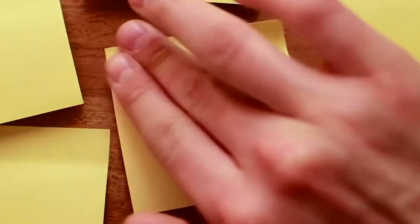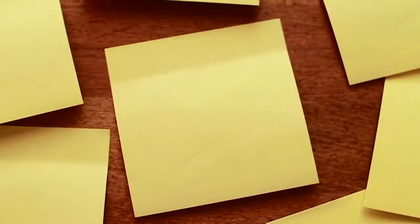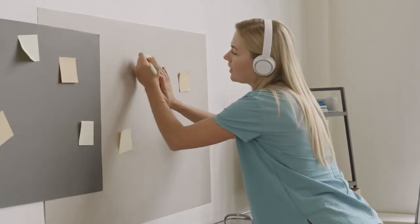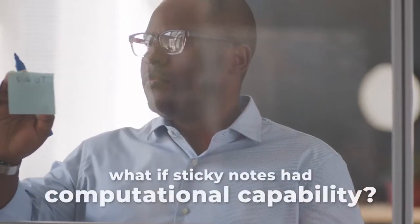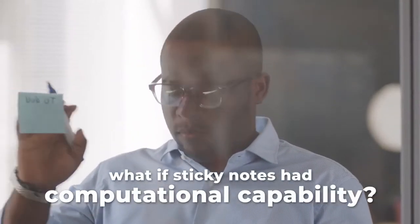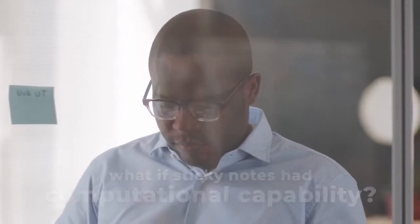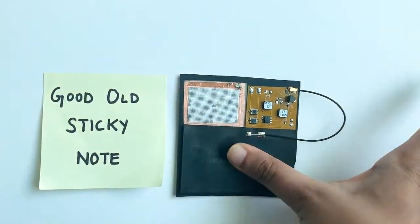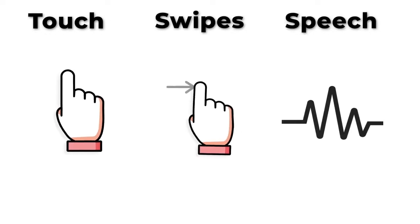Post-it notes have been historically used to provide written reminders or tag different objects with additional information. What if sticky notes had computational capability, so everyday surfaces could be used as interfaces for the Internet of Things, responding to touch, swipes, or speech?